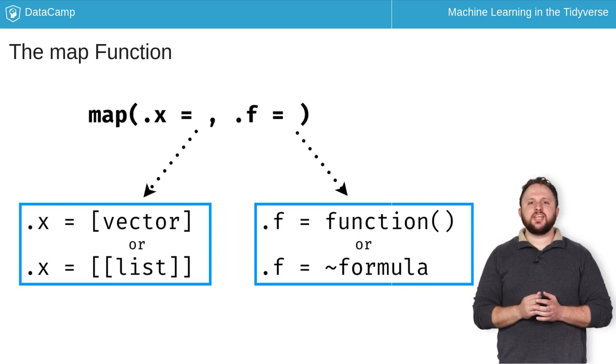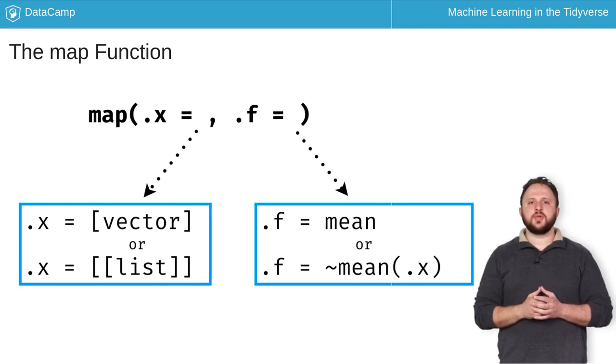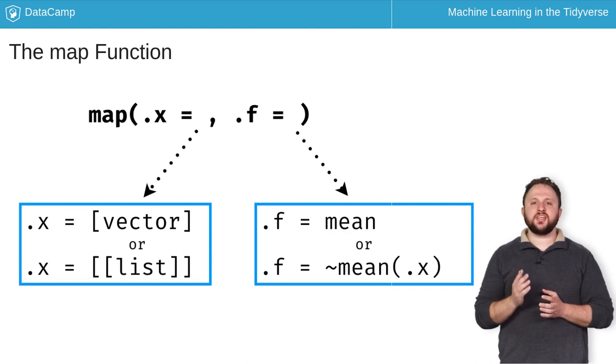The function can either be a predefined function, or it can be an anonymous function using the formula syntax. For example, if you wanted to use the mean function, you can refer to it directly, or you can build an anonymous function using the tilde to indicate that you are using a formula, and the .x to indicate the value placeholder.